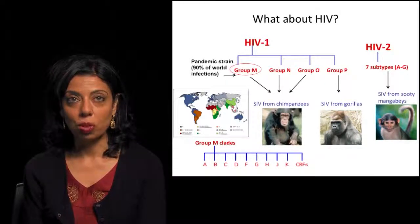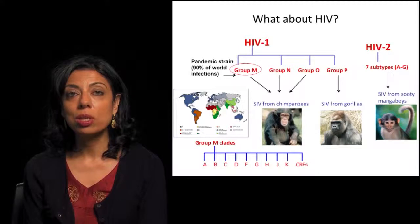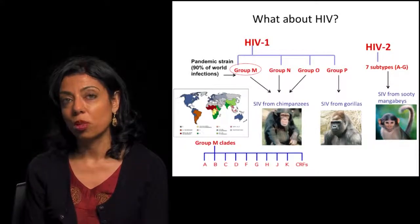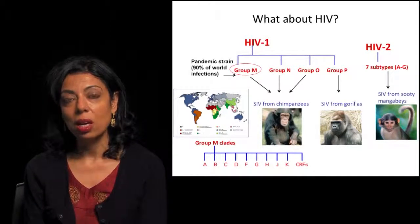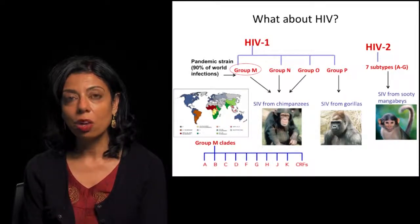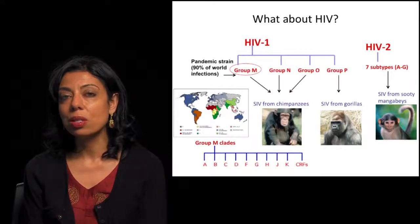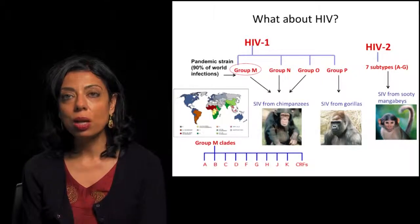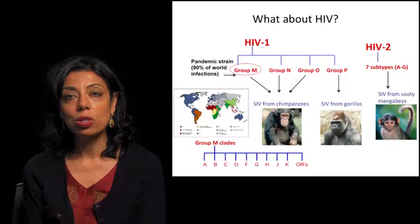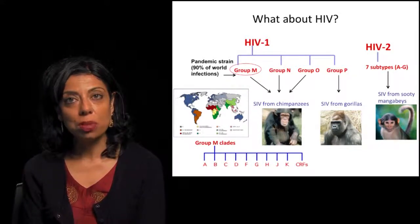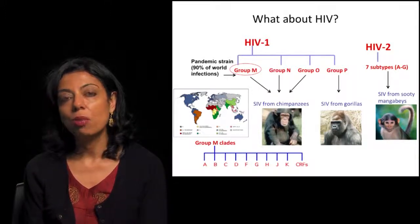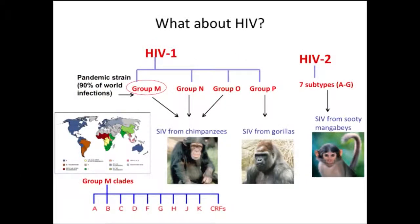The most prevalent strain of HIV in the world is HIV-1, specifically Group M, which causes 90% of world infections. That strain is most closely related to the simian immunodeficiency virus from the chimpanzee Pan troglodytes troglodytes. There are also HIV groups N, O, and P that come from different primates. HIV-2 is mostly restricted to West and Central Africa and has its own SIV origin. Group M has a number of different clades — A, B, C, D, F, G — with clade C being most prevalent in sub-Saharan Africa.